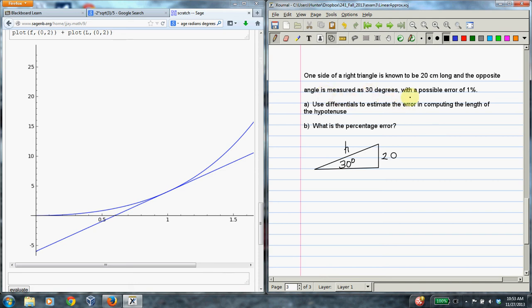And okay, so the angle is measured with a possible error of 1%. So let's just translate this here. So θ is going to be the angle in degrees. And they're saying that θ equals 30. And dθ is the error in measuring the input value. And that is 1% or 1 over 100, however you want to think of it. Okay, so those are the facts.